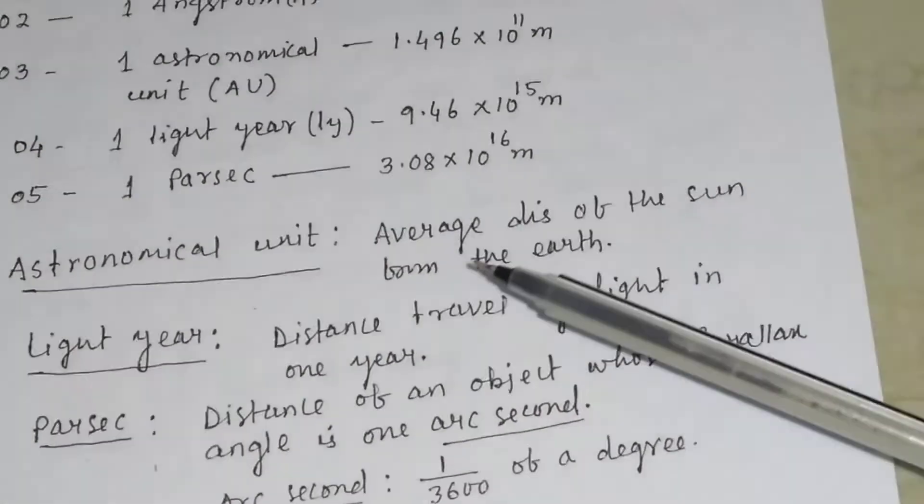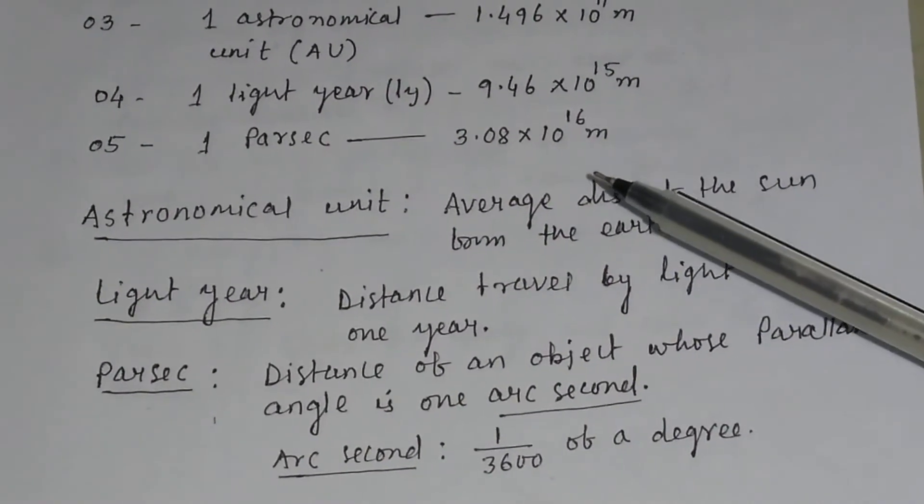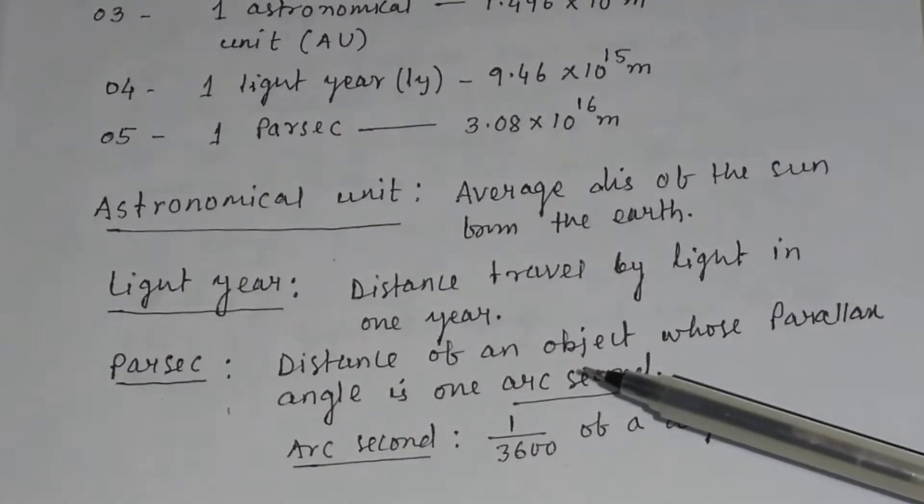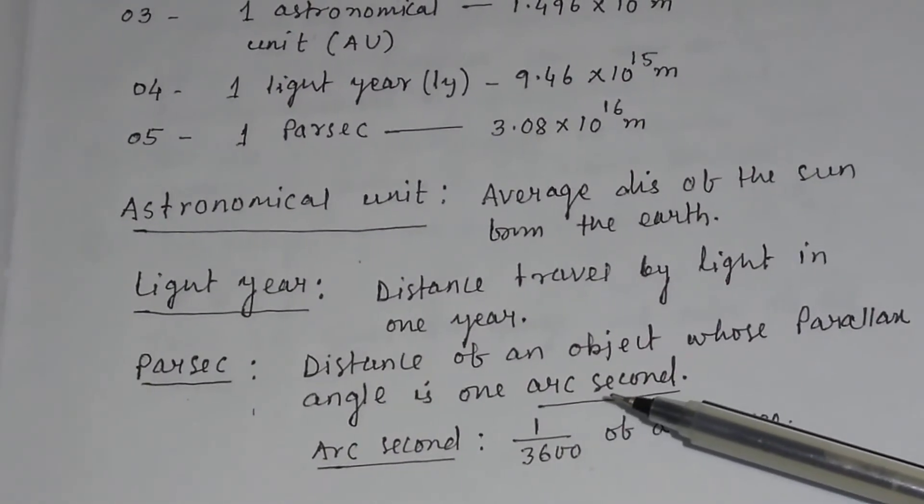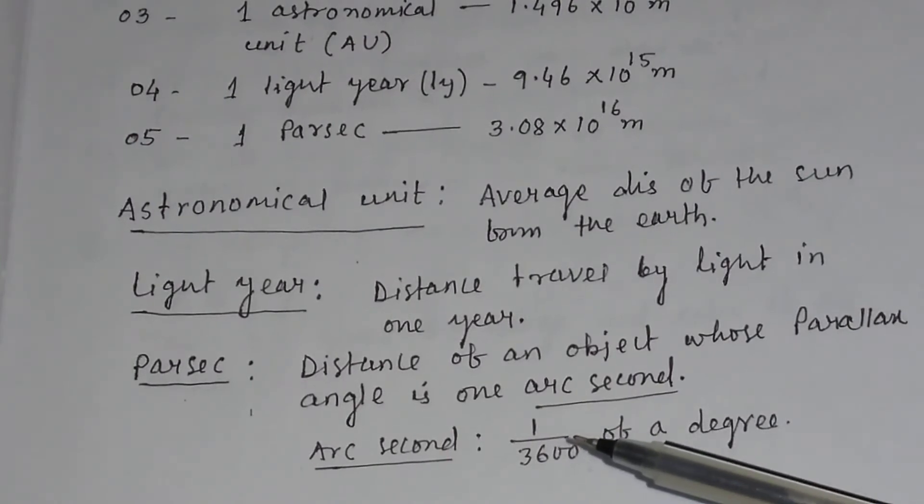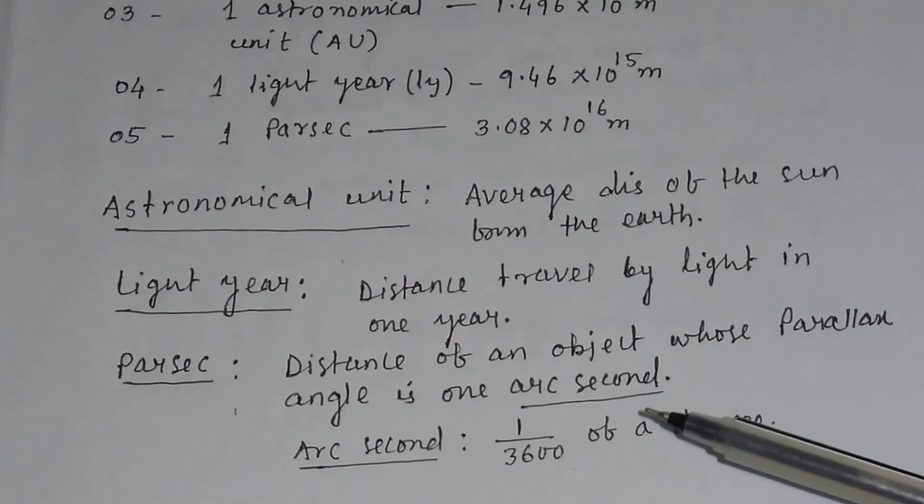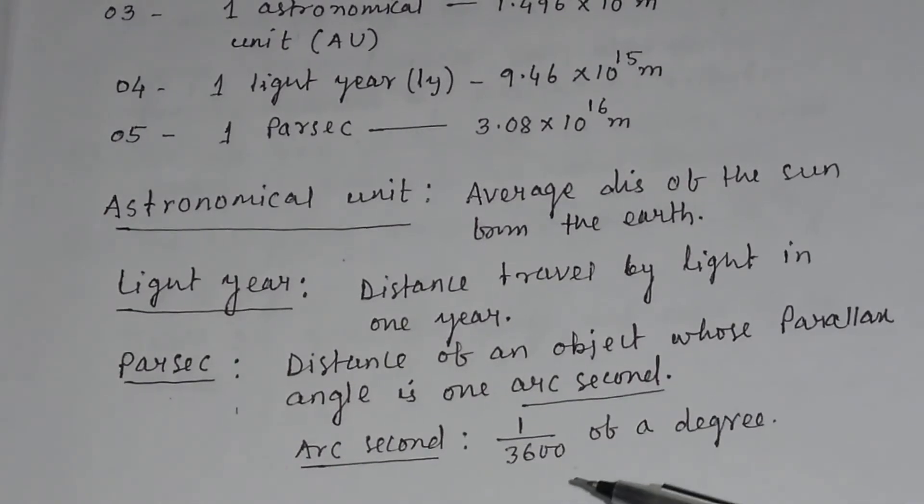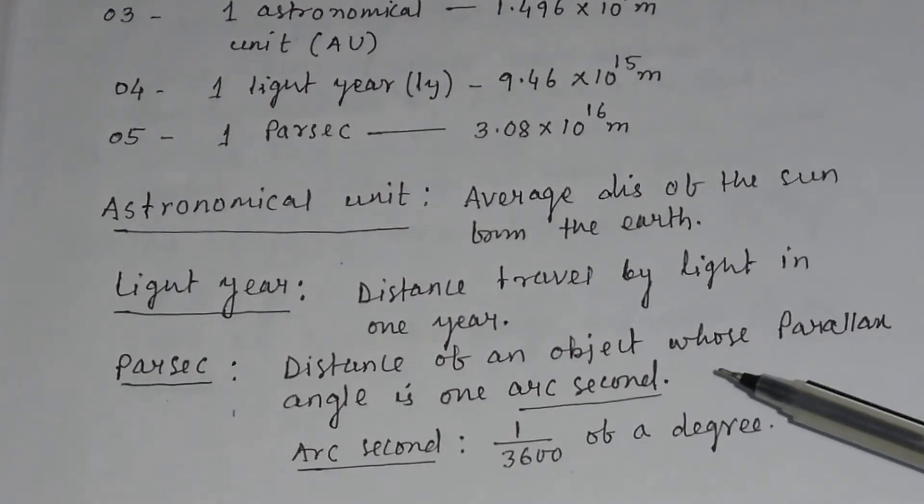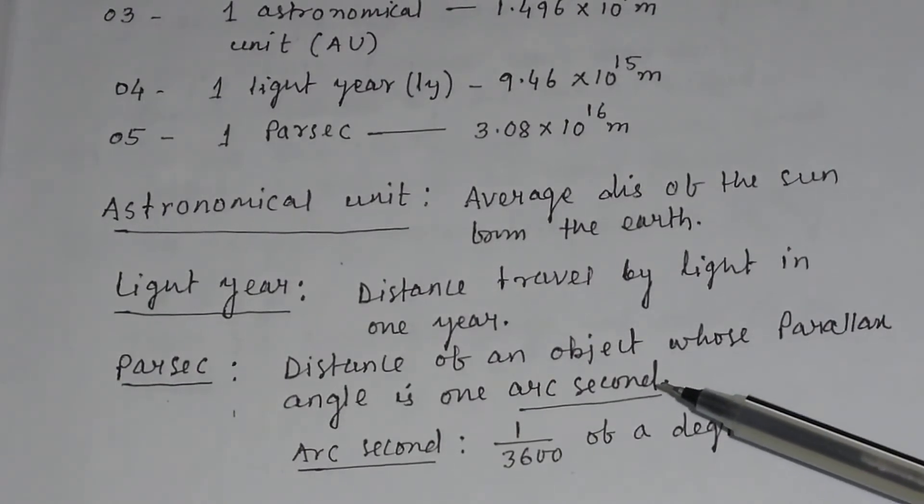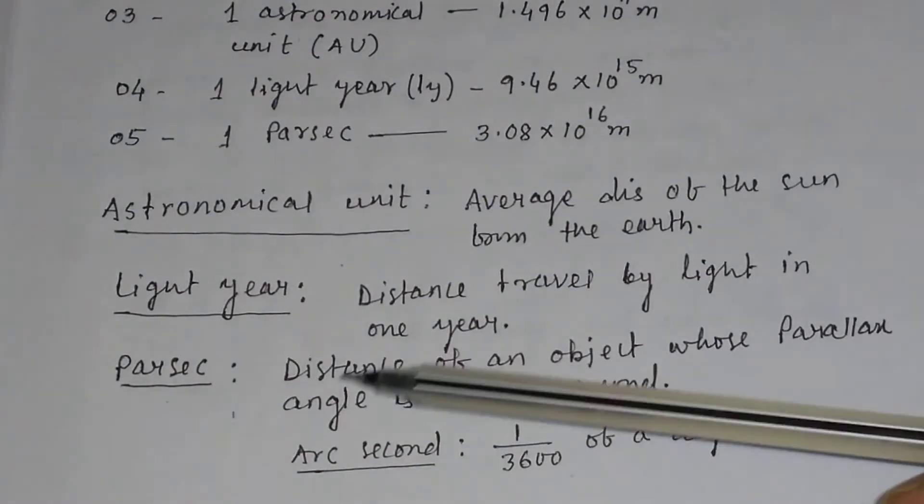And one parsec is equal to 3.08 into 10 to the power 16 meter. Parsec means the distance of an object whose parallax angle is one arc second. One arc second is equal to 1 by 3600 of a degree. So, if you take one arc second as a parallax angle, then the distance of the object will be equal to one parsec.